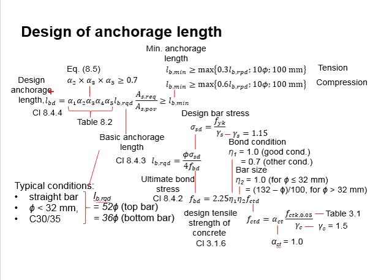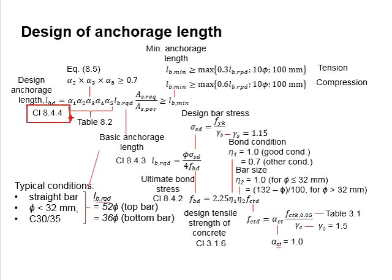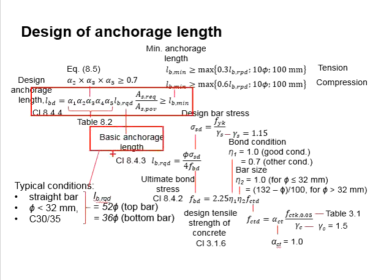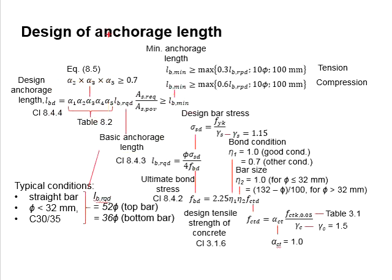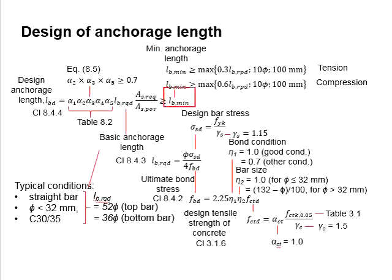The design anchorage length for reinforcing steel to be embedded in concrete is given by the equation in clause 8.4.4 of Eurocode 2. This equation is based on the basic anchorage length from clause 8.4.3. Several factors affect the required anchorage length, represented by coefficients alpha 1 to alpha 5, the ratio of required to provided reinforcement area, and a comparison with the minimum anchorage length.